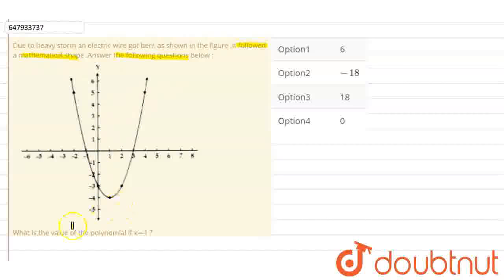What is the value of the polynomial at x equals minus 1? The question asks for the value of the polynomial at x = -1. The electric wire is bent, and we have two zeros here, which means we have a quadratic polynomial.